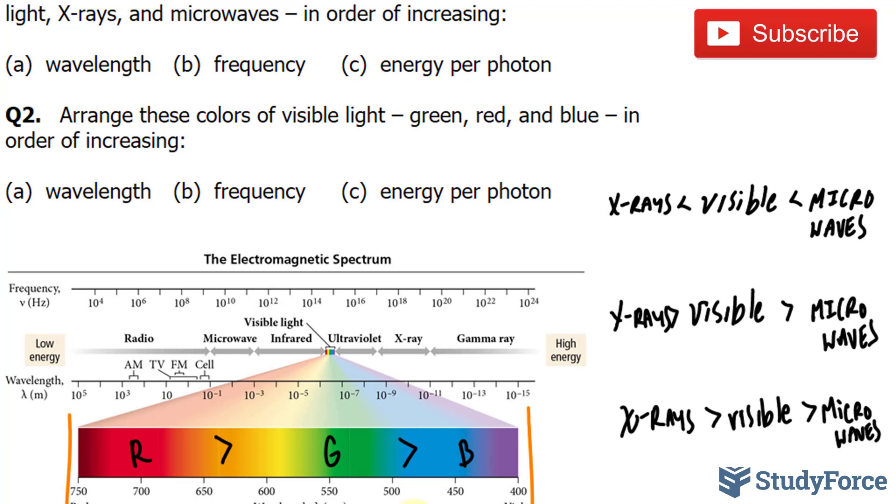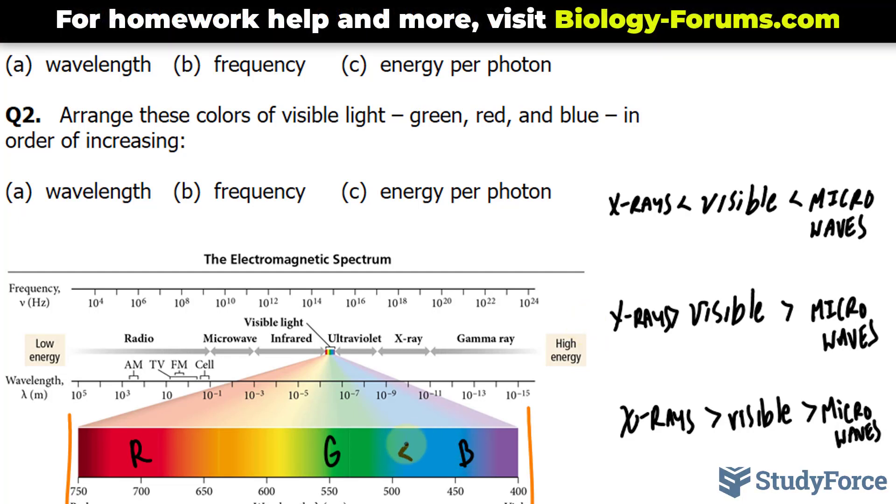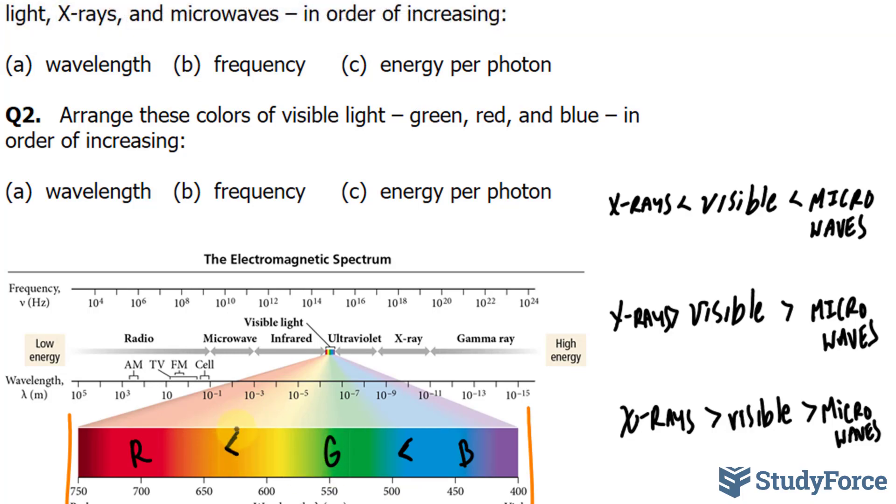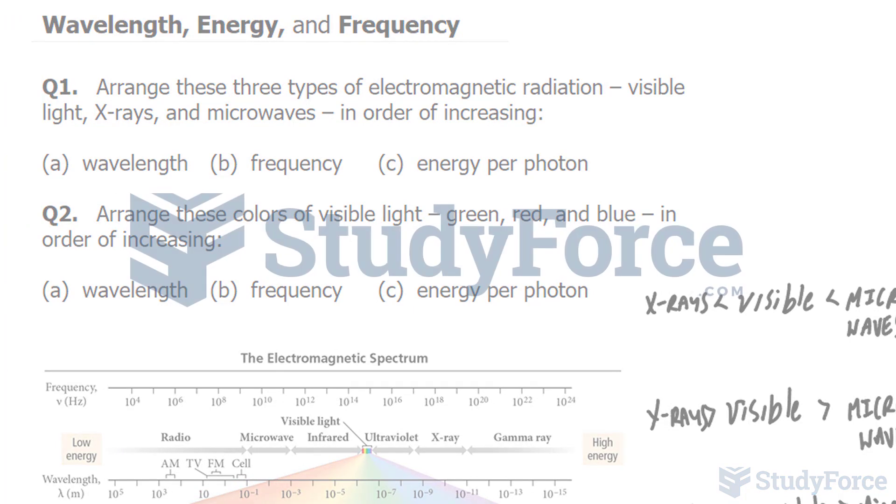For frequency, it's going to be the opposite. The frequency of green is bigger than red, and the frequency of blue is bigger than green. Notice how the numbers are getting bigger. Finally, energy per photon: blue has higher energy than green, and green has higher energy than red. And there you have it - that is how to order electromagnetic radiation by wavelength, frequency, and energy per photon.